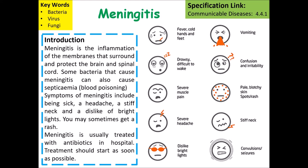The final disease to look at is meningitis. Meningitis is the inflammation of the membranes that surround the meninges in the brain and spinal cord. The bacteria that cause meningitis can also cause septicemia — blood poisoning. Symptoms of meningitis include being sick, a headache, stiff neck, dislike of bright lights, and you may also get a rash. Meningitis is usually treated with antibiotics in hospital, and it is really important that treatment is started as soon as possible to stop complications such as septicemia from occurring.